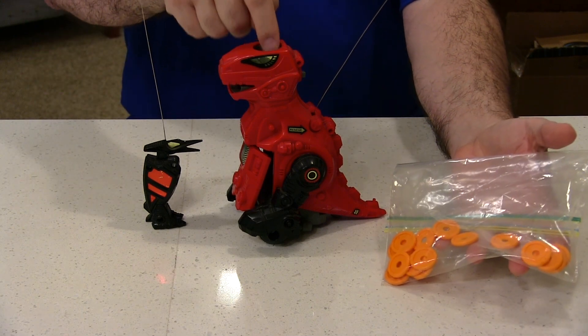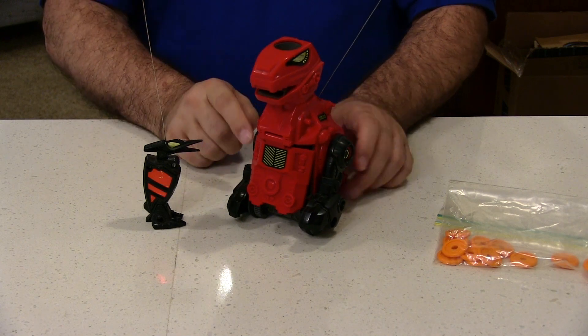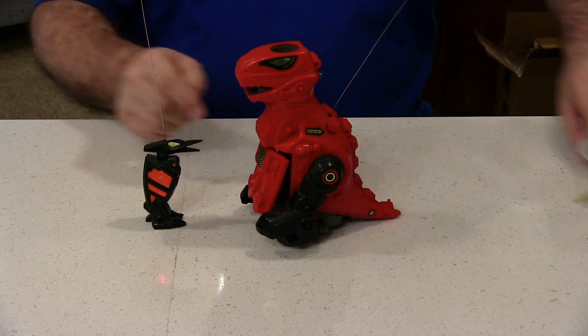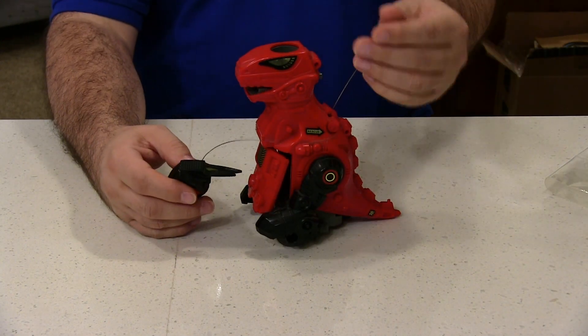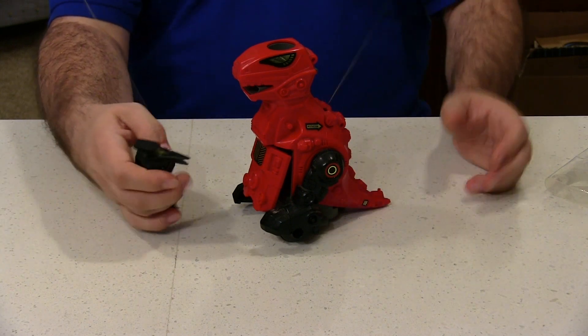Now here's the little discs that you put into the top of his head here, and they shoot out of his mouth. This is a remote control. I don't know if you can see the antennas on here.